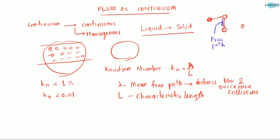After this collision, it travels further — this is another free path. After that collision, it hits another atom. The average of all these distances — this one, and this one, and this one — the average of those distances is the mean free path. The average distance between two successive collisions is called the mean free path.